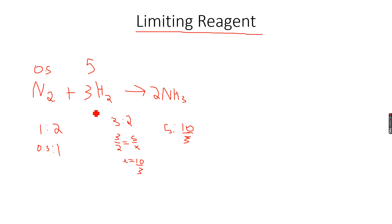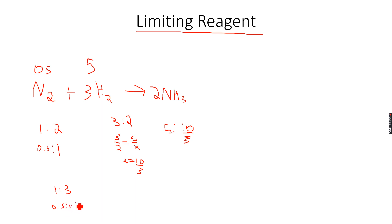Let's look at the ratio between nitrogen and hydrogen, which is 1:3. That means every mole of nitrogen reacts with 3 moles of hydrogen. So 0.5 moles of nitrogen will react with 1.5 moles of hydrogen. But we have 5 moles of hydrogen, so hydrogen is in excess.